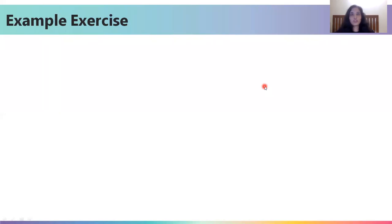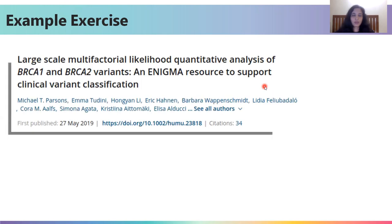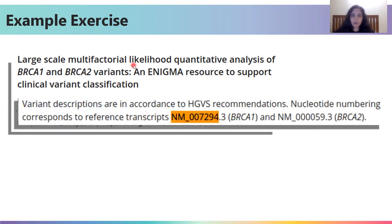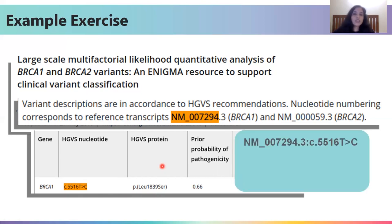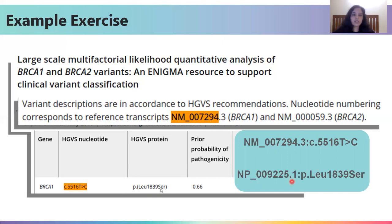Let us look at how the Mutalizer suite of tools can help us with our workflow through an example exercise. Assume you are a researcher working with the BRCA1 gene. You come across a paper that talks about BRCA1 and 2 variants. You find that a particular NM ID is associated with BRCA1 in this paper. Your variant of interest is a 5516 T to C variant where T is substituted by C at position 5516, leading to a leucine to serine conversion at the 1839th position. Using this information, you can create your NM ID by joining the reference sequence part with the coding description using a colon, and similarly create an NP ID.